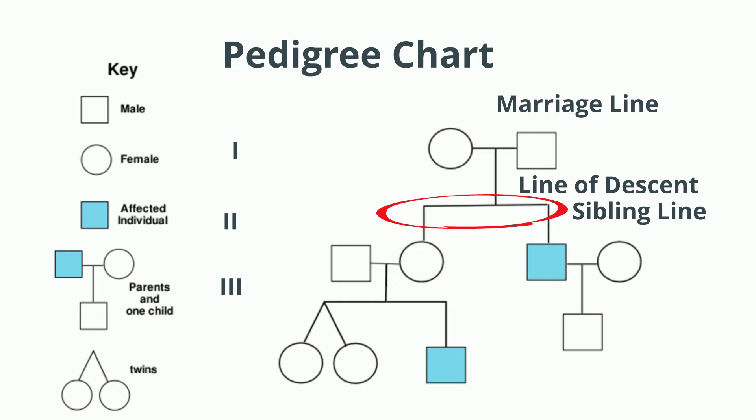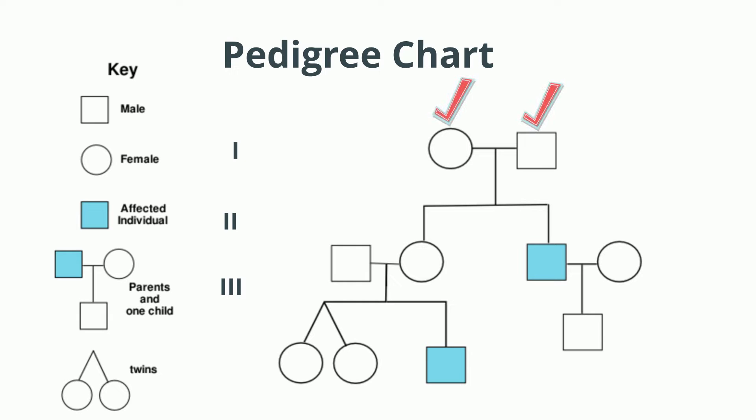Let's take a look at this one and see if we can figure out if it's dominant or recessive. Notice that the couple in Generation 1. The female does not have the trait or disease. The male does not either. Since neither parent has the trait or disease...